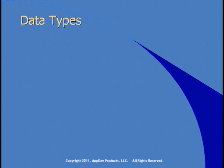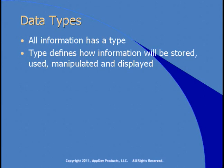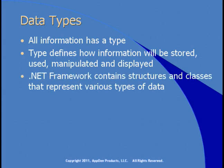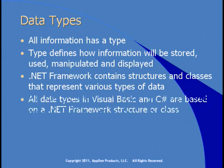Variables have three components: a name, values, and data types. All information has a type, and the type defines how the information will be stored, how you'll use and manipulate it, and how you can display it. The .NET framework contains structures and classes that represent all types of data — numeric, string, date, or time. All data types in both Visual Basic and C# are based on a .NET framework structure or class.